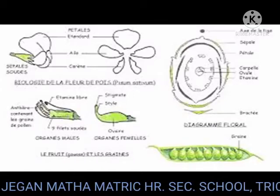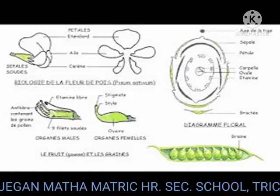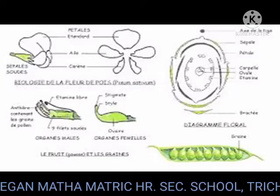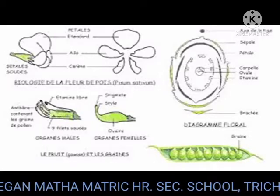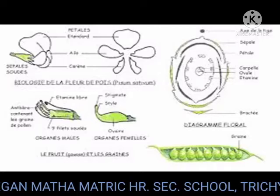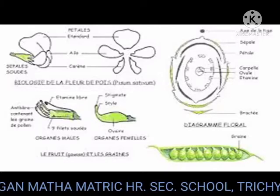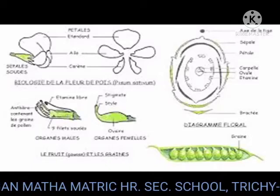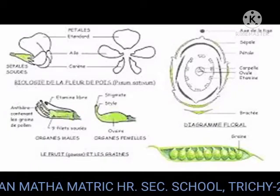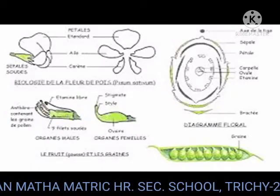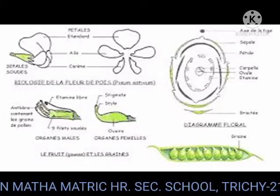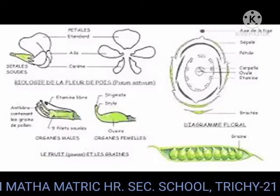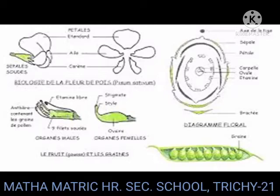Androecium: stamens 10, diadelphous — that is, arranged in 9 plus 1. Nine stamens are attached and only one is free; 9 stamens fused to form a bundle and the 10th stamen is free. Anthers are dithecous, basifixed, introrse, and dehisce by longitudinal slits.